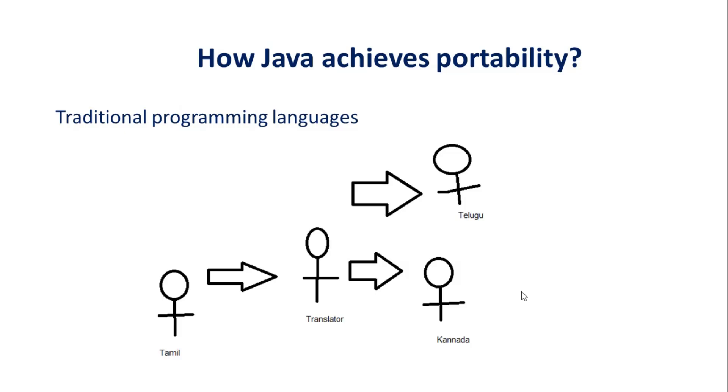We'll see how Java achieves portability, that is platform independence. In order to understand that, we need to first see how the traditional programming languages work. For example, programming languages like C or C++, they are not platform-independent. If you compile that language, the source code will be converted into platform-specific object code and that will run only in that platform. For example, if you compile a C code in Windows platform, it will be converted into object code for that specific Windows platform and it can run only in Windows platform.